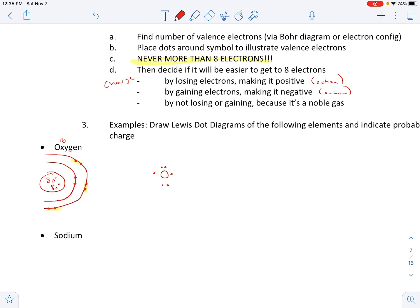So now if we look at this, would oxygen most likely gain two electrons, making it negative two, or would it lose six, becoming positive six? That's right. It's going to gain two, which makes it negative two. So it's most likely charge is negative two.